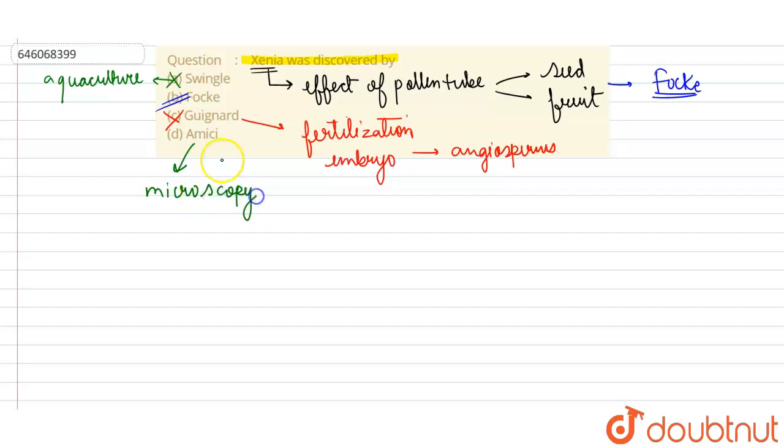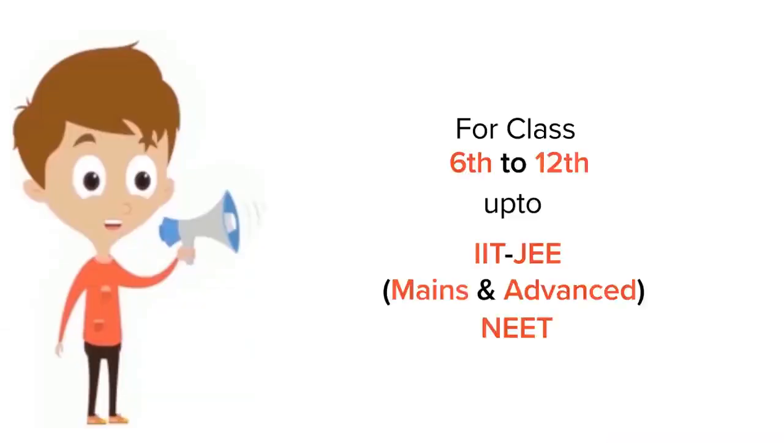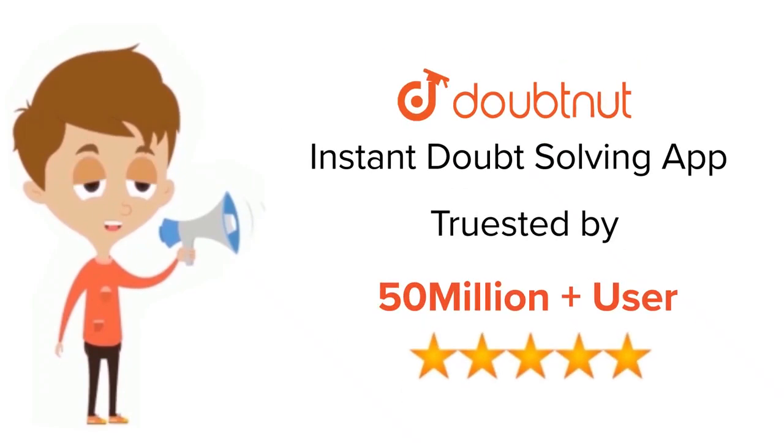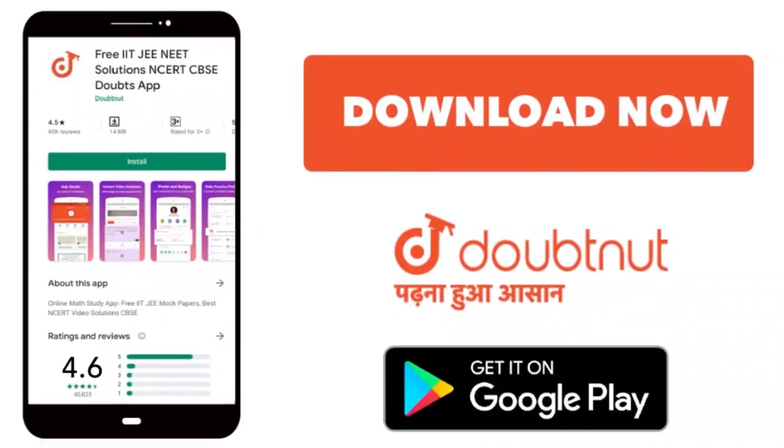So option B is the correct option here. Thank you. For class 6th to 12th, IIT-JEE and NEET level, trusted by more than 5 crore students, download Doubtnet app today.